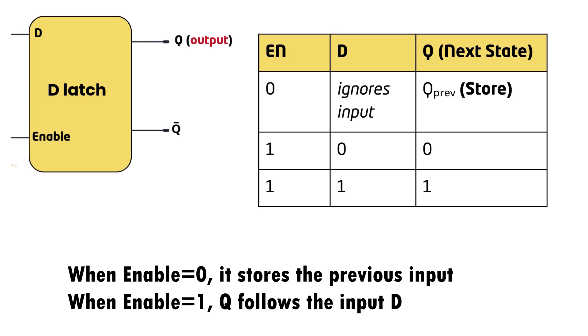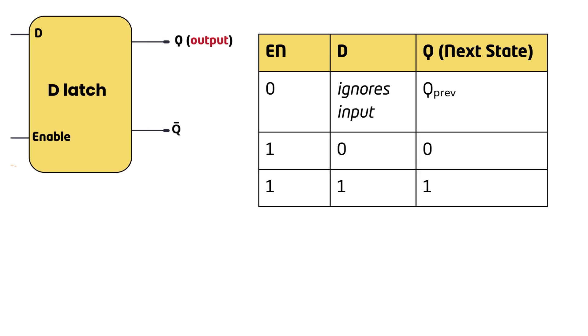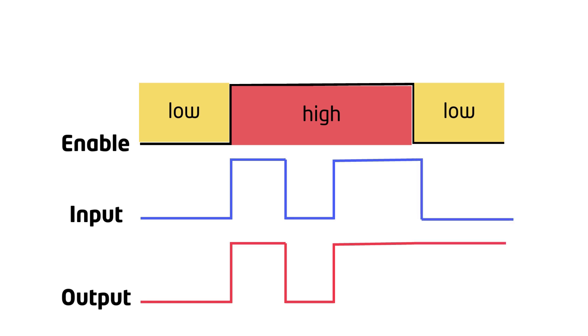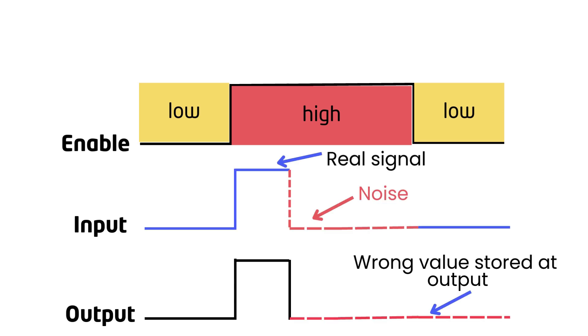But wait, we still have one critical problem. Let's take a closer look at the relationship between the inputs and the output. This is the enable signal. It has two states: low and high, as shown here. When the enable signal is high, the D latch continuously follows the input, meaning the output changes immediately based on the input. When the enable signal is low, the latch stores the last input value and ignores any further changes. Now, if the input contains noise or unwanted fluctuations while the enable signal is high, the output will also capture those fluctuations, leading to incorrect or unintended values, as shown here.